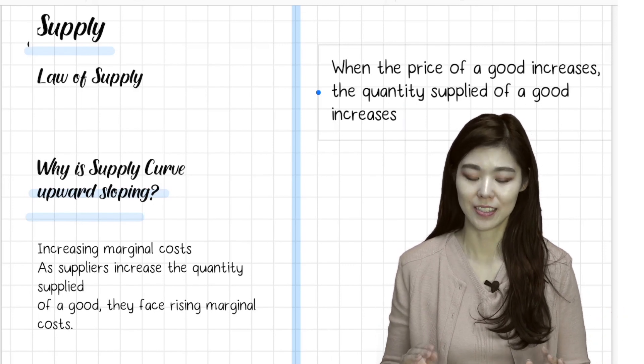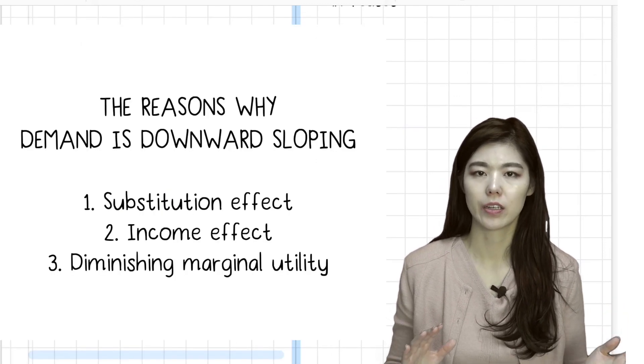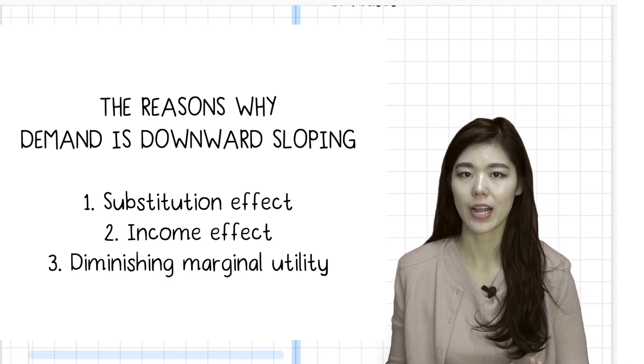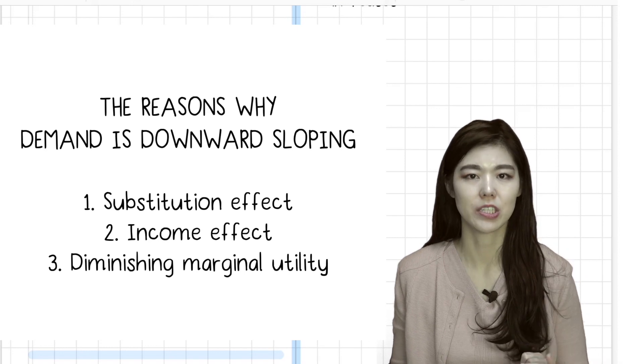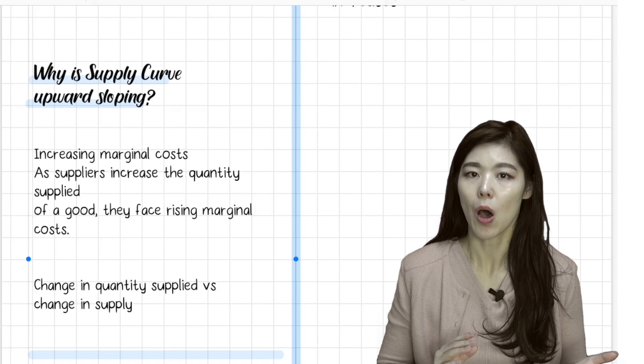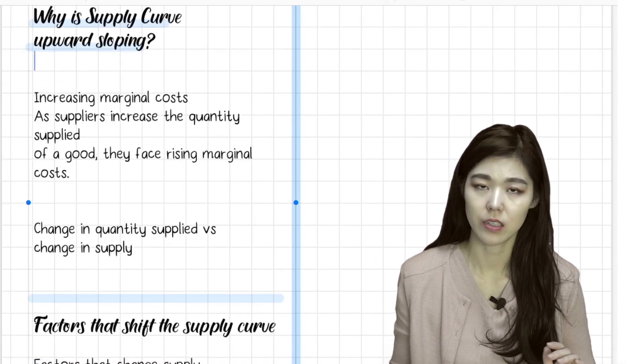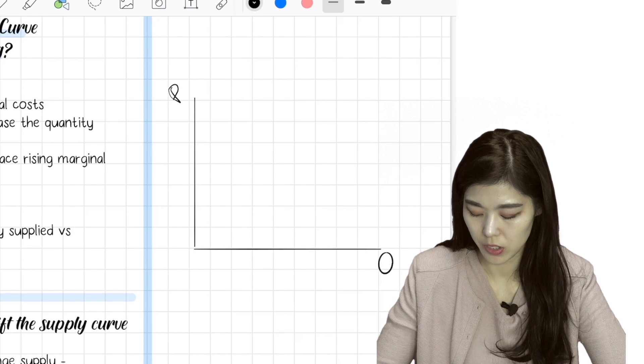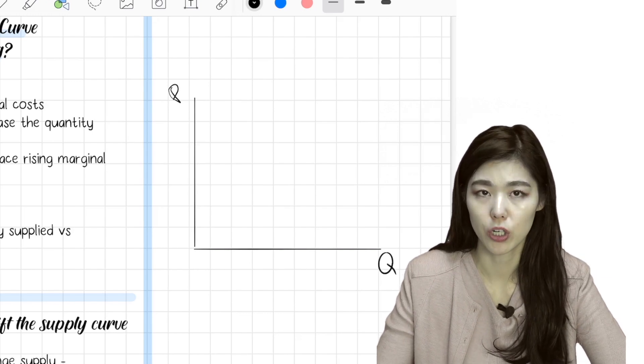Remember the reasons why demand was downward sloping: because of substitution effects, income effect, and diminishing marginal utility. Here, the supply curve also has a reason for its upward sloping shape, but it's a little bit more simple than demand. This is P, Q. The supply curve will look like this.